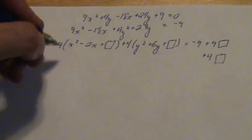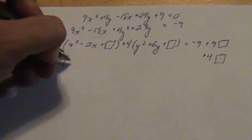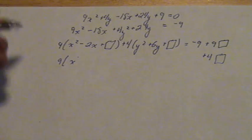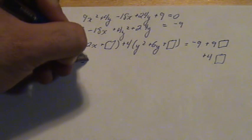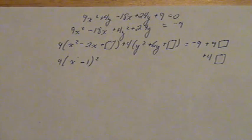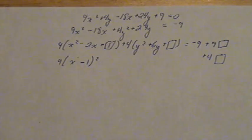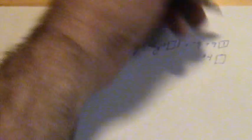Okay, time to complete the square. 9 times x, half of that negative 2 is negative 1. Square it and you will have a 1 in this box and a 1 in the corresponding box on the other side of the equal sign.